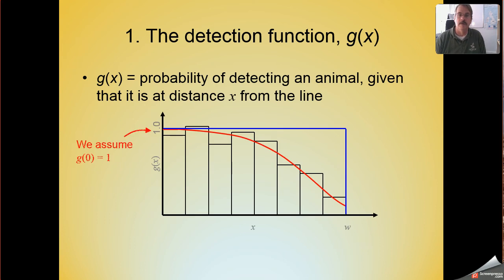We talked about the detection function carrying along with it the assumption that the probability of detecting an animal, given that it is at distance 0 from the line, namely on the line, is equal to 1.